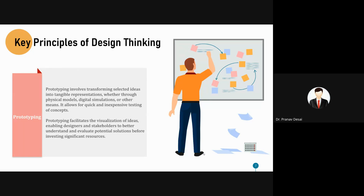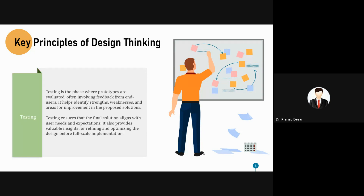Prototyping involves transforming selected ideas into tangible representations through physical models, digital simulations, or other means. It allows for quick and inexpensive testing of concepts. If at prototype level it is not getting better results, it is not advisable to proceed further — it is an acid test of the product. Testing is the phase where prototypes are evaluated, often involving feedback from users to identify strengths, weaknesses, and proposed solutions. Testing ensures that the final solution aligns with user needs and provides insights for refining and optimizing the design.